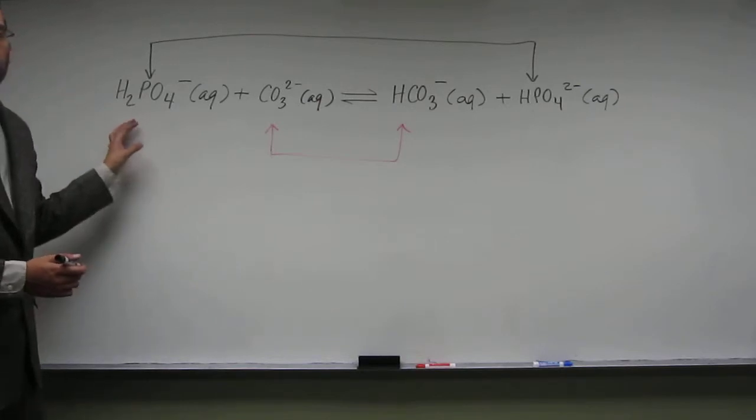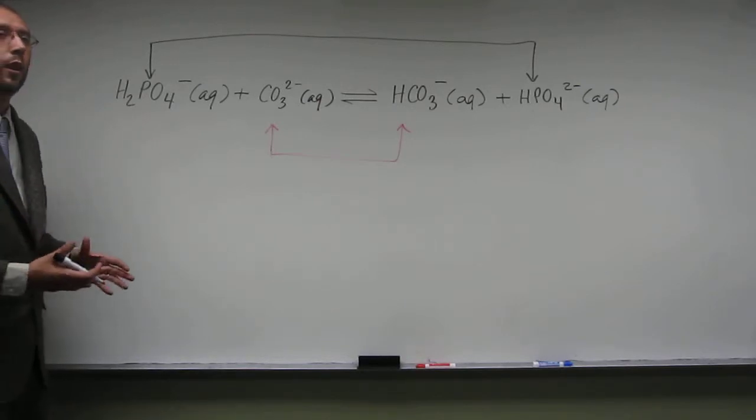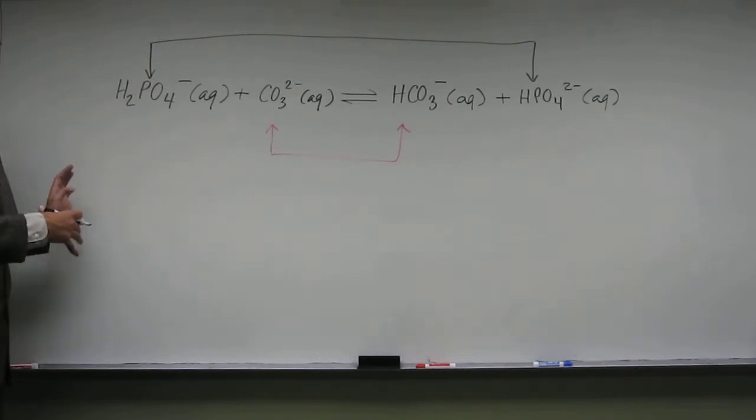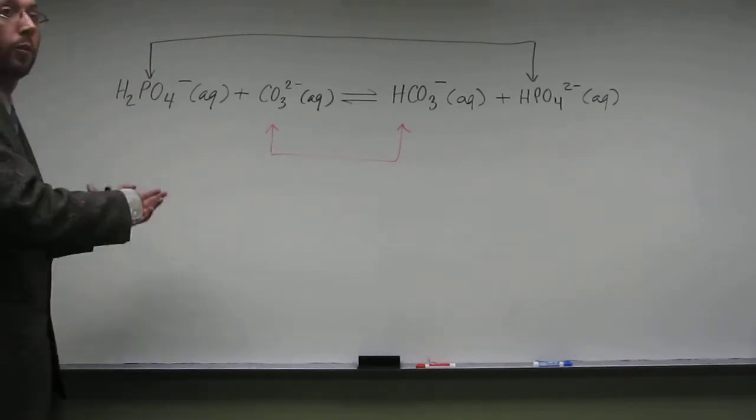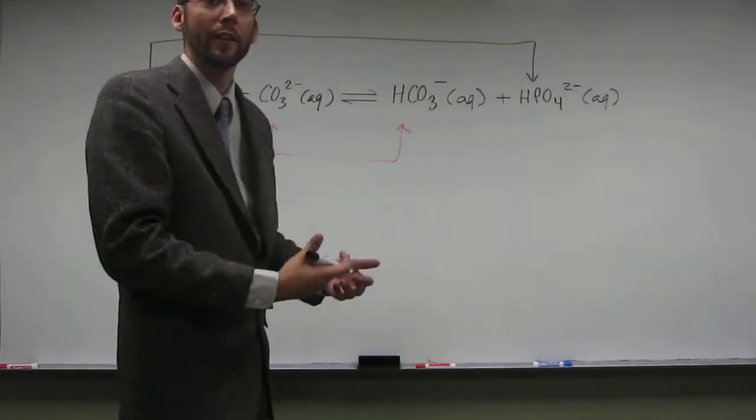So we typically when we're doing these problems we'll call the things on the reactant side the acid and the base, and the things on the product side their conjugate acid and conjugate base.